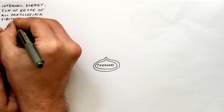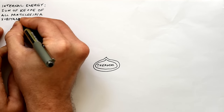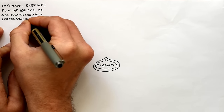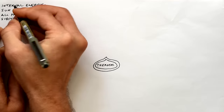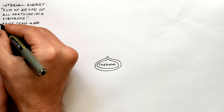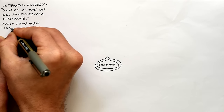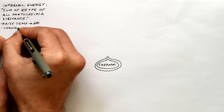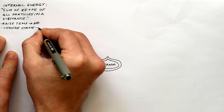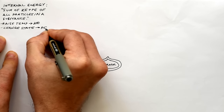Internal energy is the sum — the total — of kinetic energy and potential energy of all particles in a substance. If we raise the temperature of a substance, the kinetic energy of the particles increases, and if we change the state of the substance — say from solid to liquid or liquid to gas — the potential energy of the particles increases.